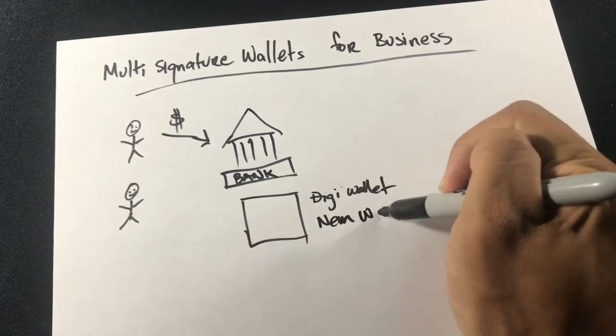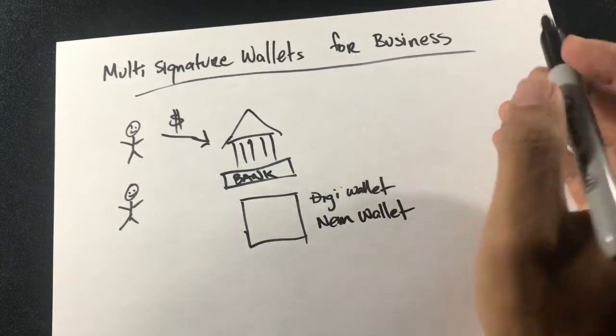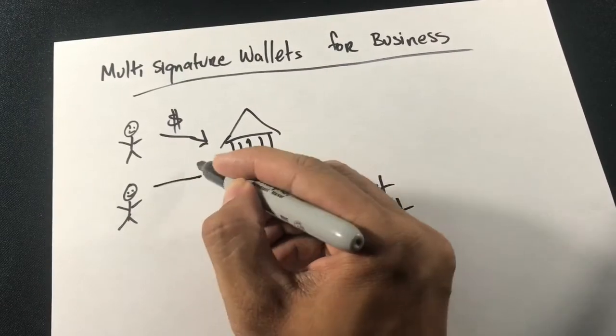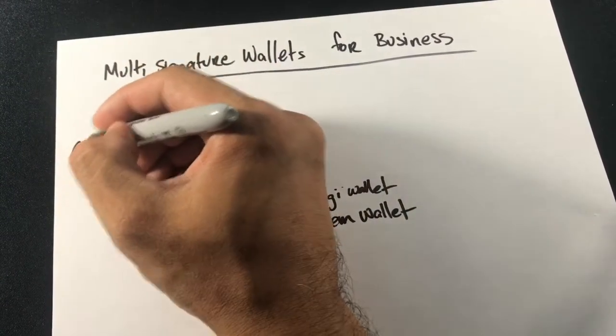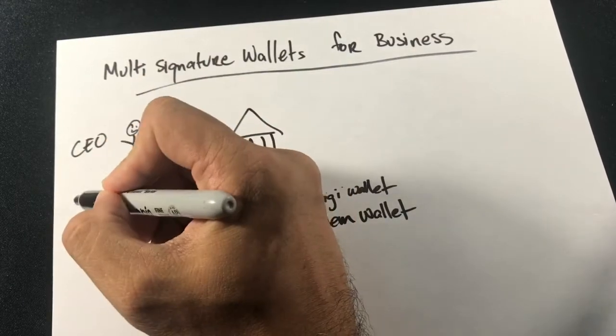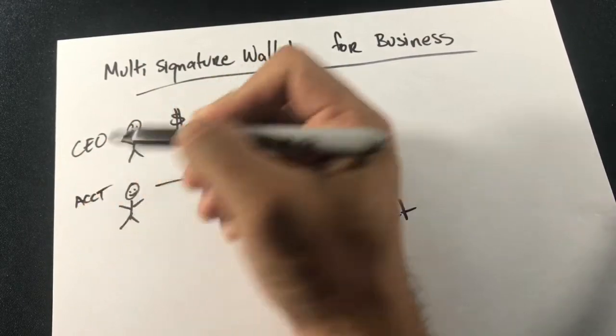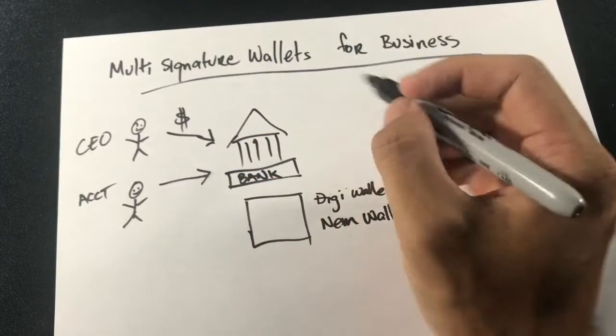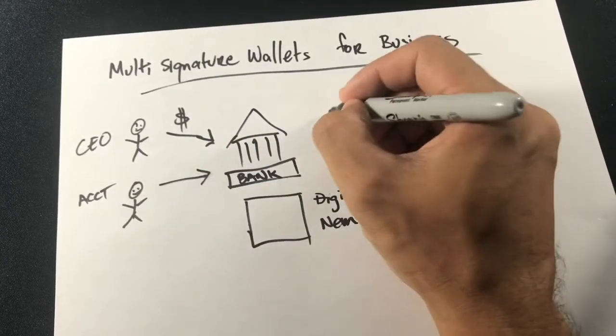I'm currently using NEM wallet as an example because it's one of the wallets that has multi-signature features right out of the box. The currency is not too unstable compared to some other ones, and this is also the platform I'm going to be working on when I develop my new app. So just a disclaimer, I do own some NEM or ZEM.